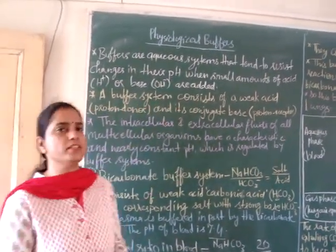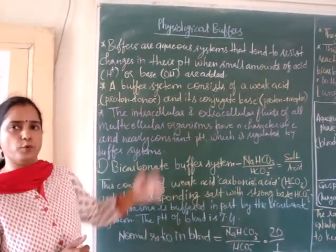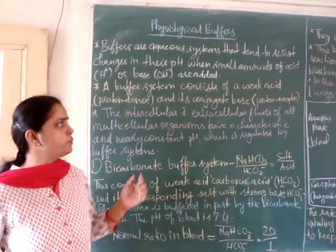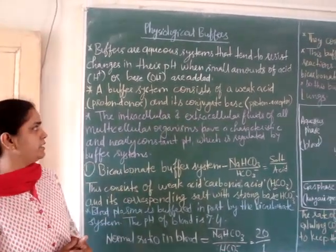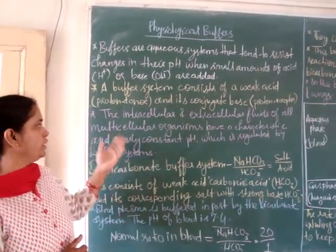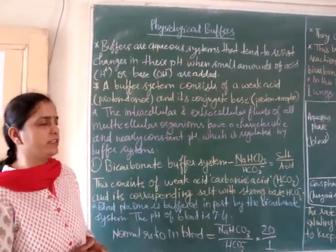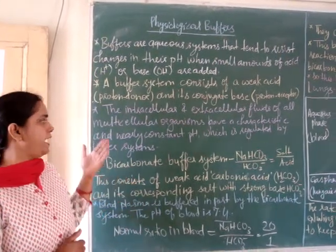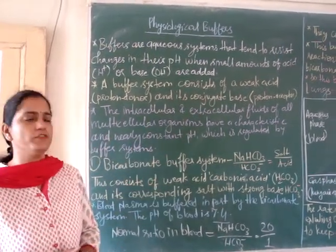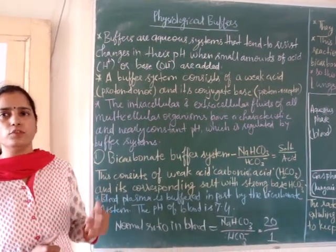A buffer system consists of a weak acid, that is a proton donor, and its conjugate base, that is a proton acceptor. The intracellular and extracellular fluid of multicellular organisms have a characteristic and nearly constant pH which is regulated by buffer systems.